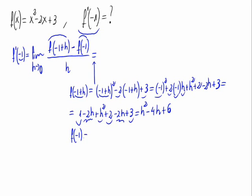Now let's calculate f of minus 1. Wherever x appears, we write minus 1. So we get minus 1 squared minus 2 times minus 1 plus 3, which equals 1 plus 2 plus 3, giving us 6.